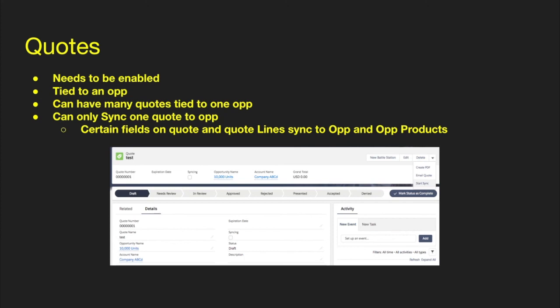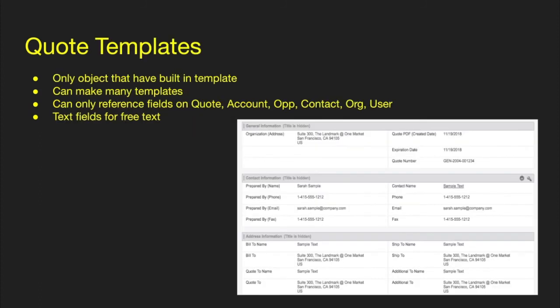Next is quotes — you need to enable it if you want to use it. Quotes are tied to an opportunity and you can have many quotes tied to one opportunity. You can sync one quote to the opportunity at a time; when you sync it, certain fields on the quote and quote lines sync to the opportunity and opportunity products. This is great if you want multiple options — you can create a quote for different product configurations and then sync whichever one is leading. One cool thing about quotes is that it's the only object with a built-in template. You can create many quote templates and reference fields on the quote, account, opportunity, contact, organization, and user, and also add free text fields and insert images.